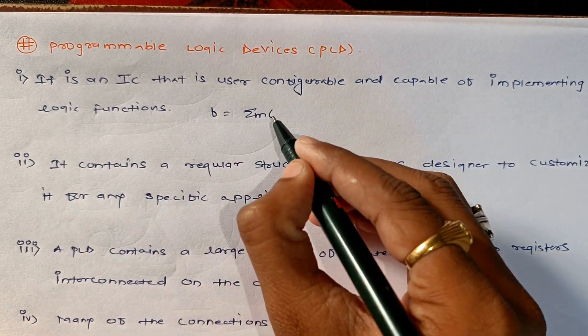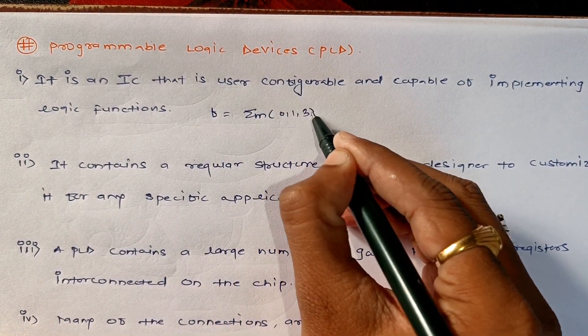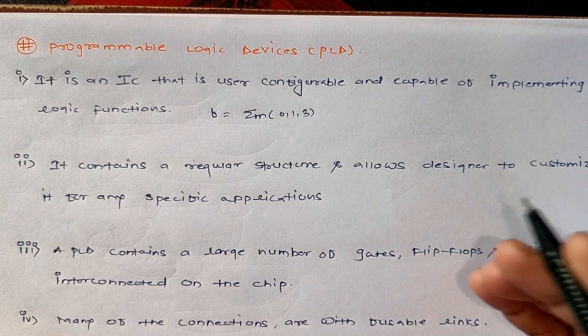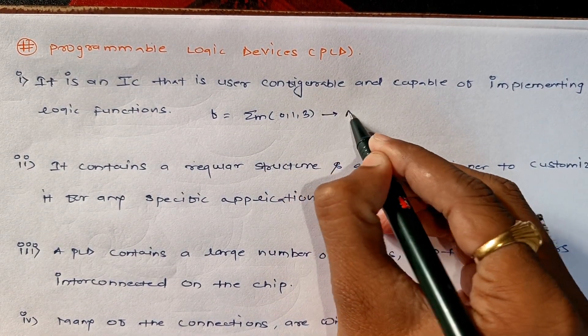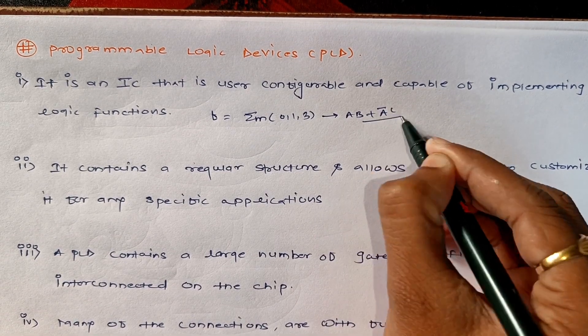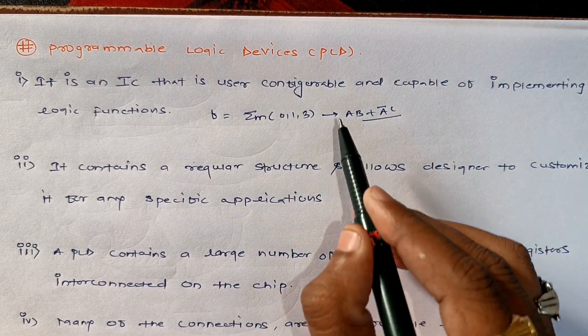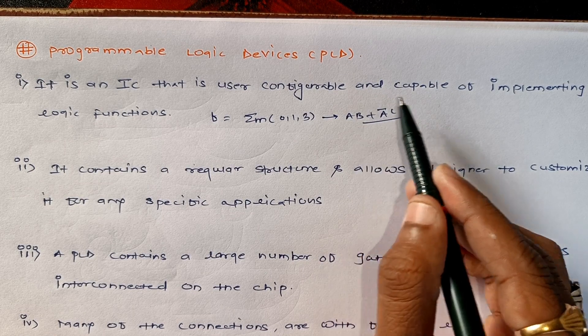A logic function may be SOP form or POS form. For example, if I have 0, 1, 3, I can take its expression. Maybe if I get it like AB plus A bar into C, I'm just taking an example. So this one is a structure to implement.